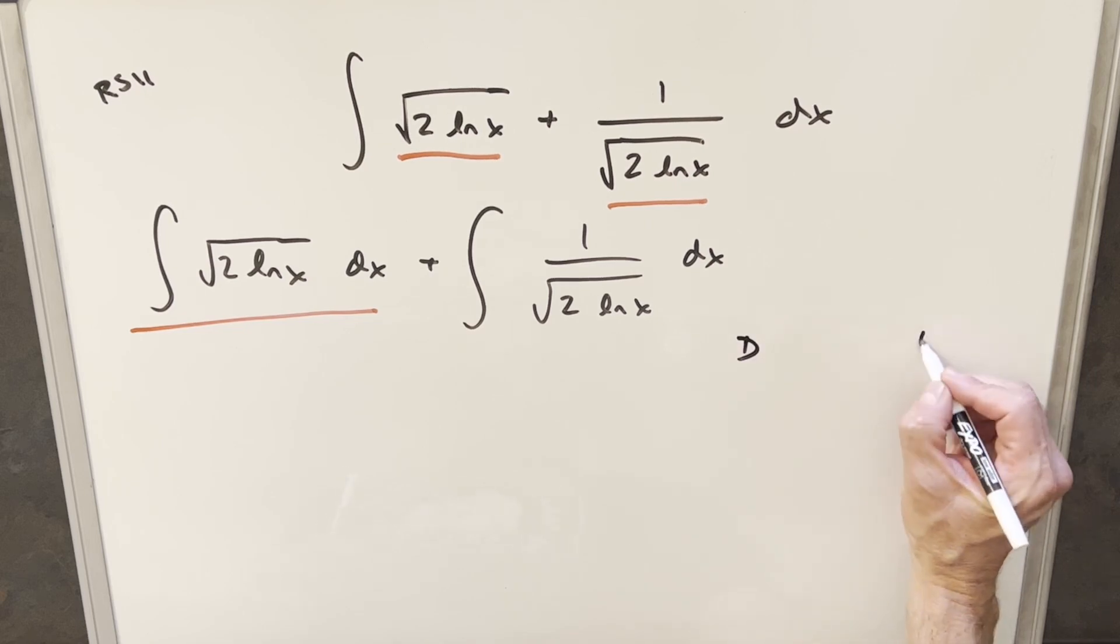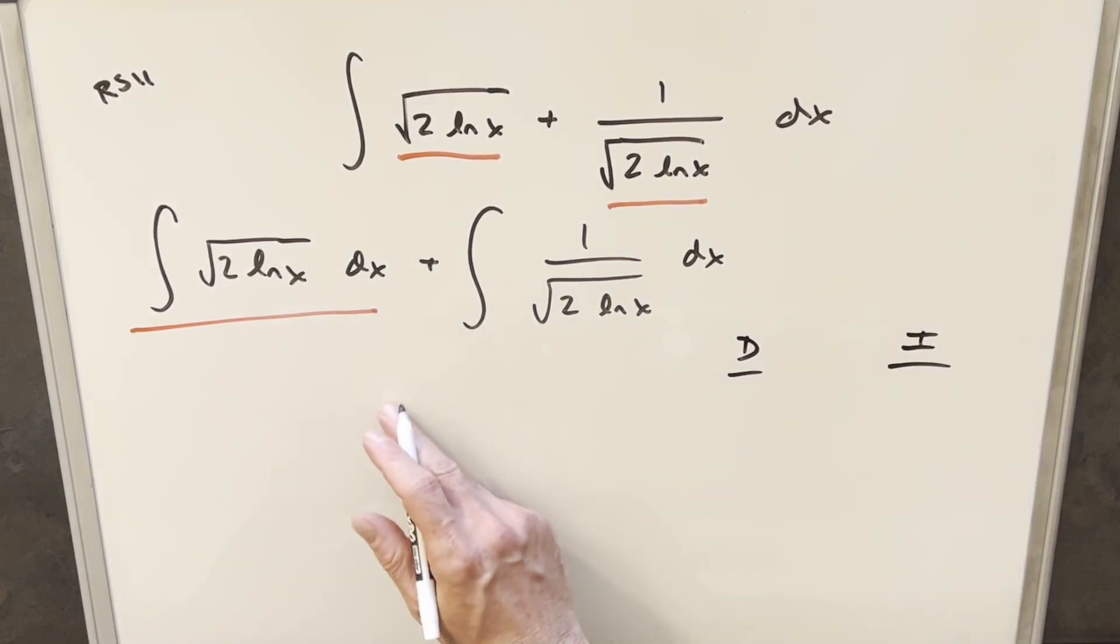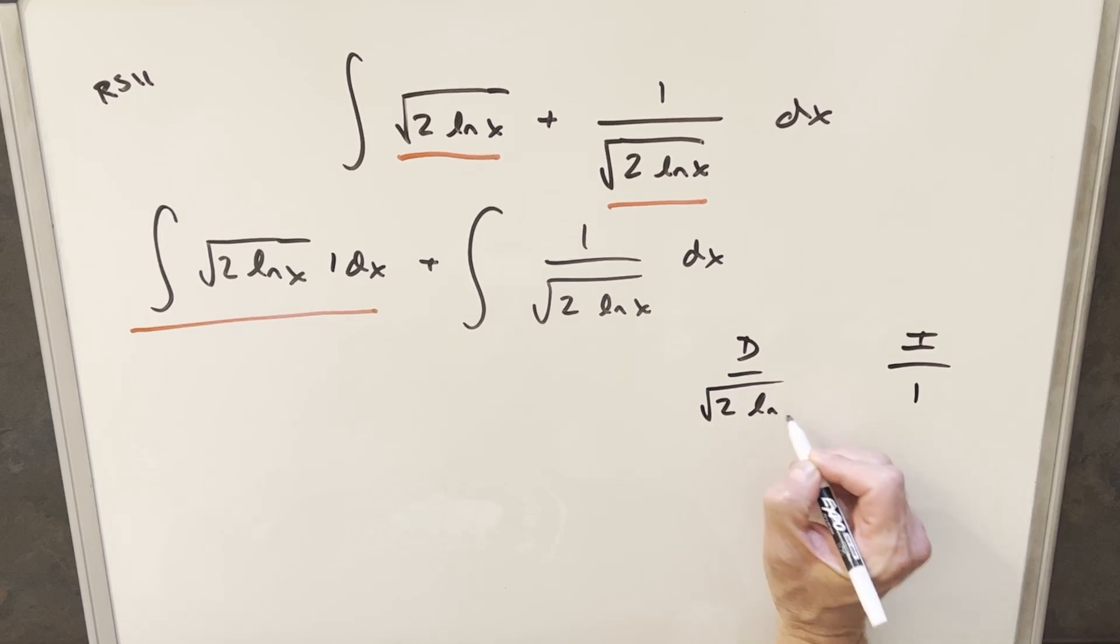So for integration by parts, we're going to do the DI method, tabular integration. We really only have one function over here, so I'm going to create a one and we're just going to integrate one and differentiate this whole thing, square root of 2 ln x. And integrating one, of course, we're going to get just x.